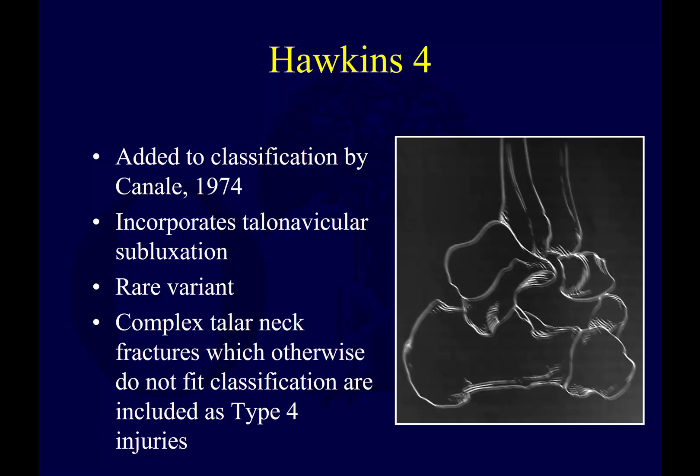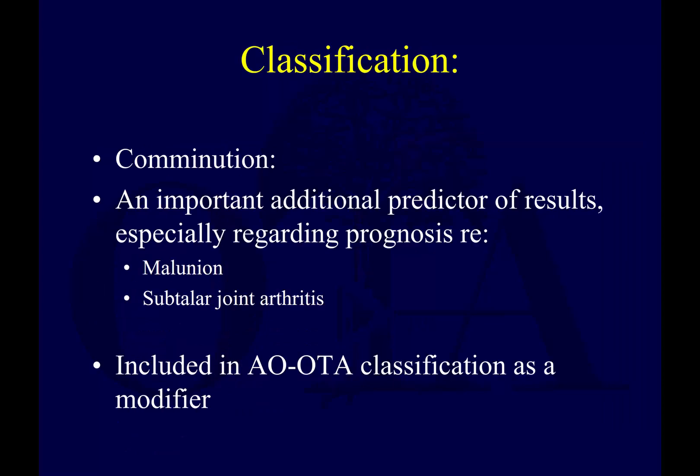Comminution is also important and unfortunately can lead to malunion and subtalar joint arthritis. It is not fully captured in the Hawkins classification, but in the AO/OTA classification it is included, because it is one of the things you must take into account when assessing these injuries.